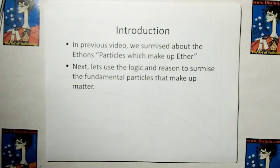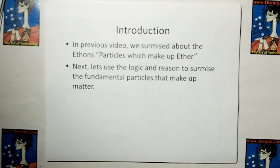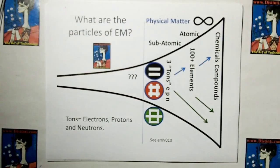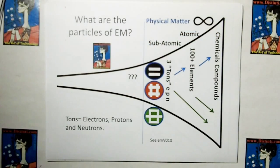Okay, in the previous video, we surmised about the ethons, particles which make up the ether. Next, let's use logic and reason to surmise about the fundamental particles that make up matter. If we go to the structure, which I call the epochs of natural structure, you can go back to video 8 or 10 somewhere around there to get a better acquaintance of these.